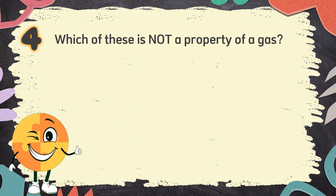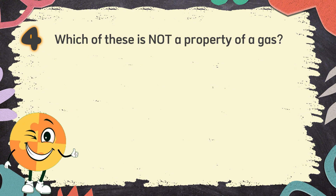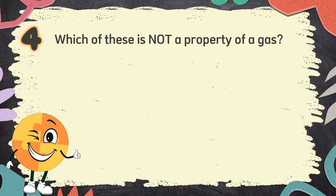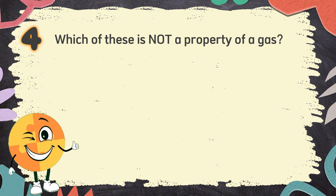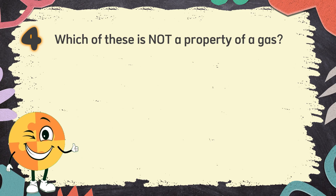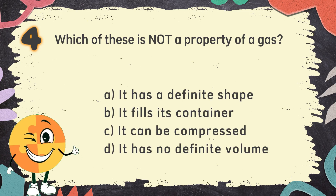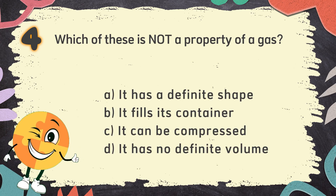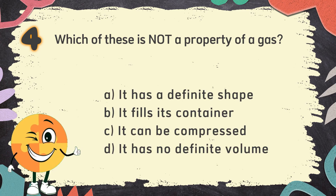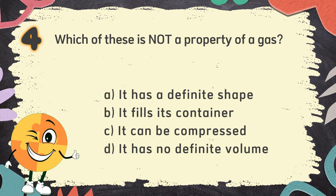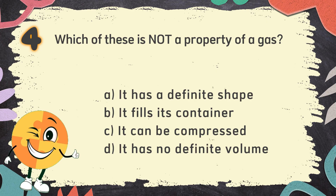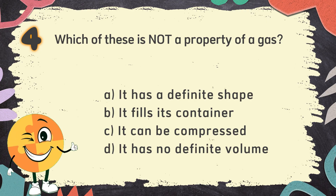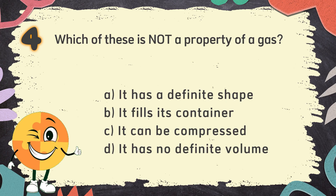Number 4. Which of these is not a property of a gas? The choices are: A. It has a definite shape, B. It fills its container, C. It can be compressed, D. It has no definite volume.